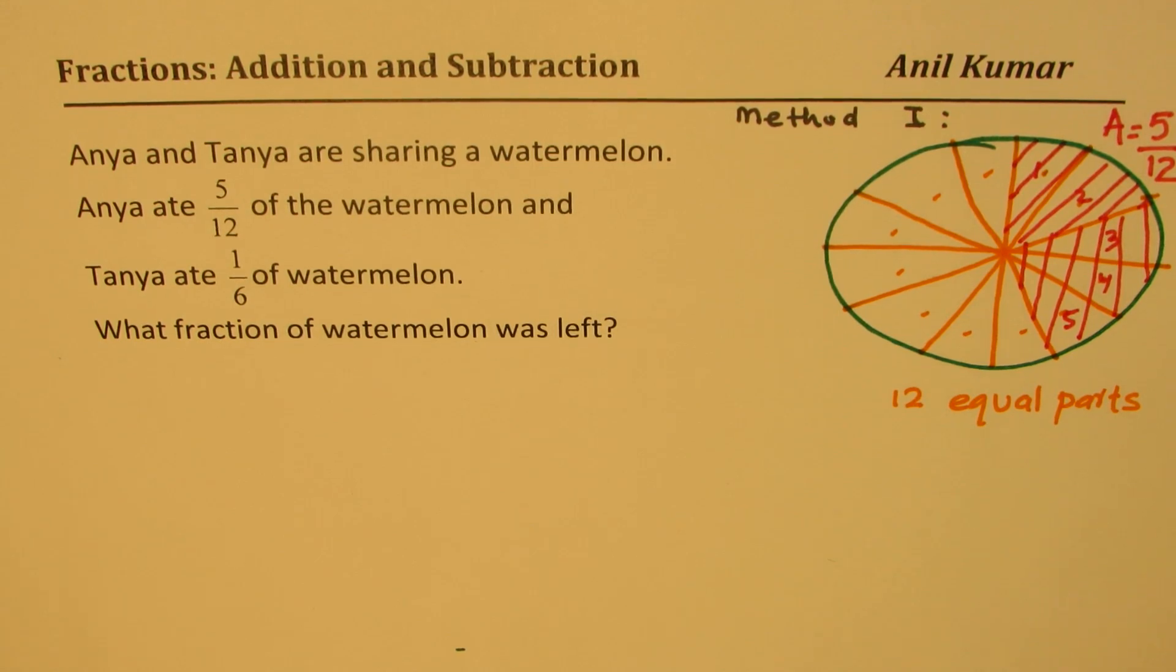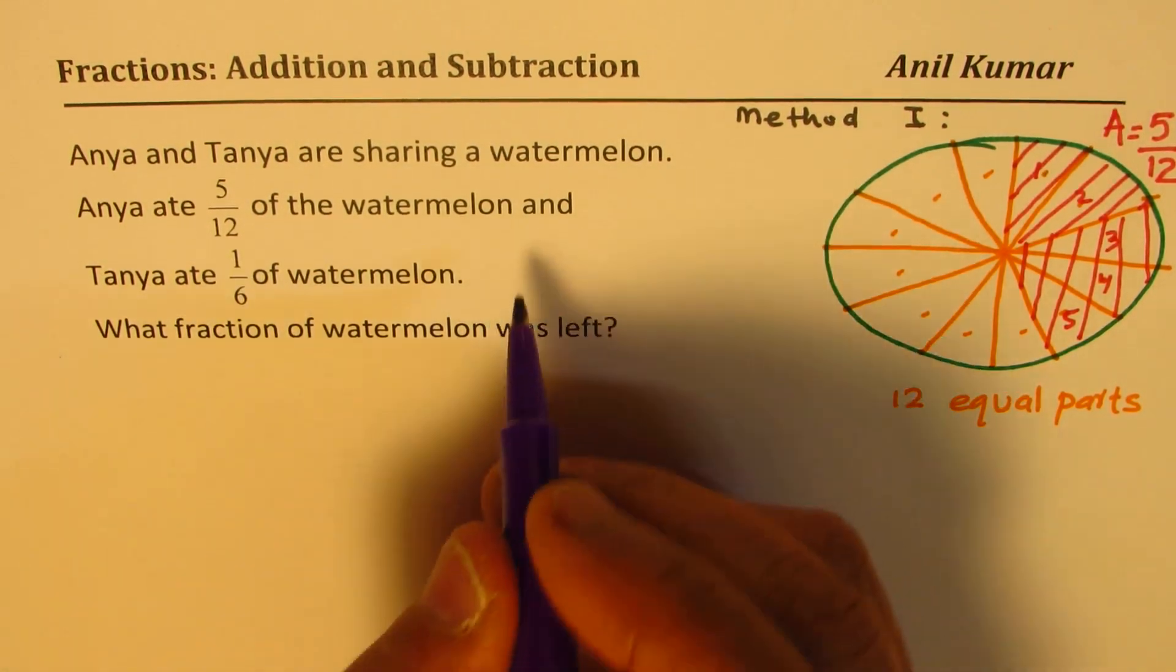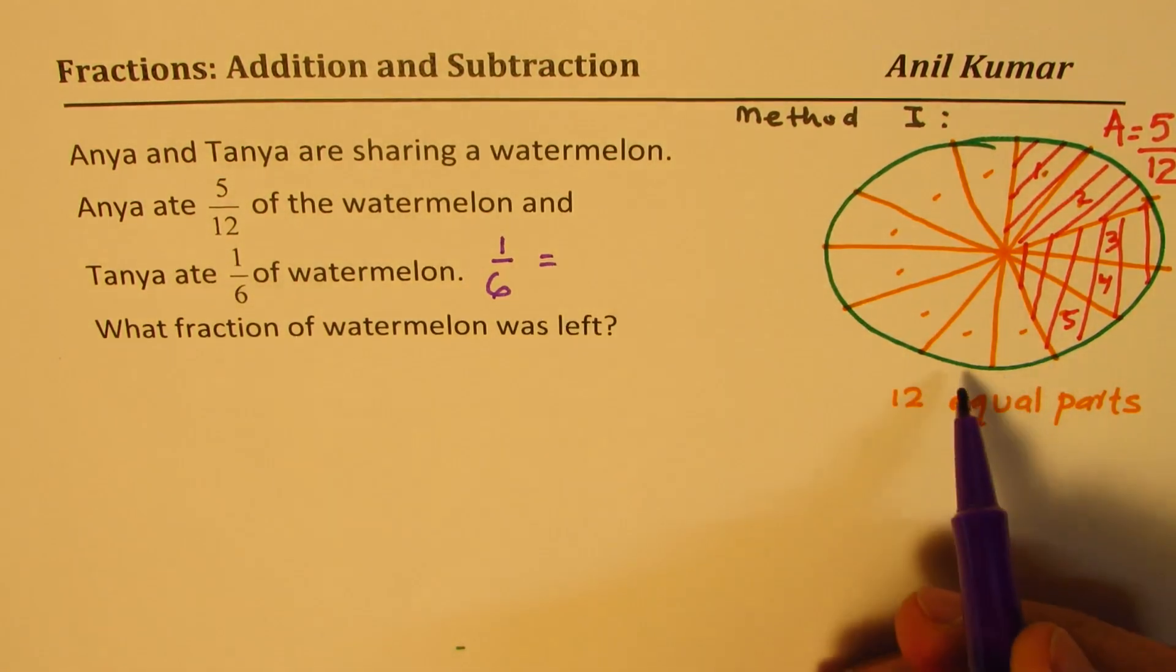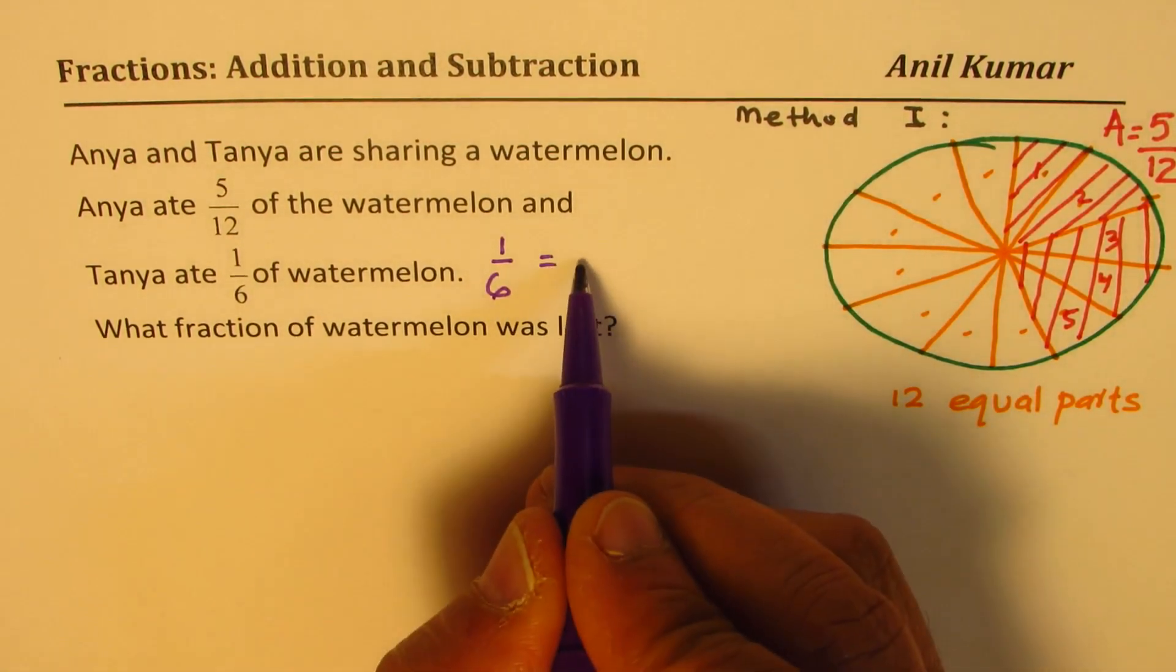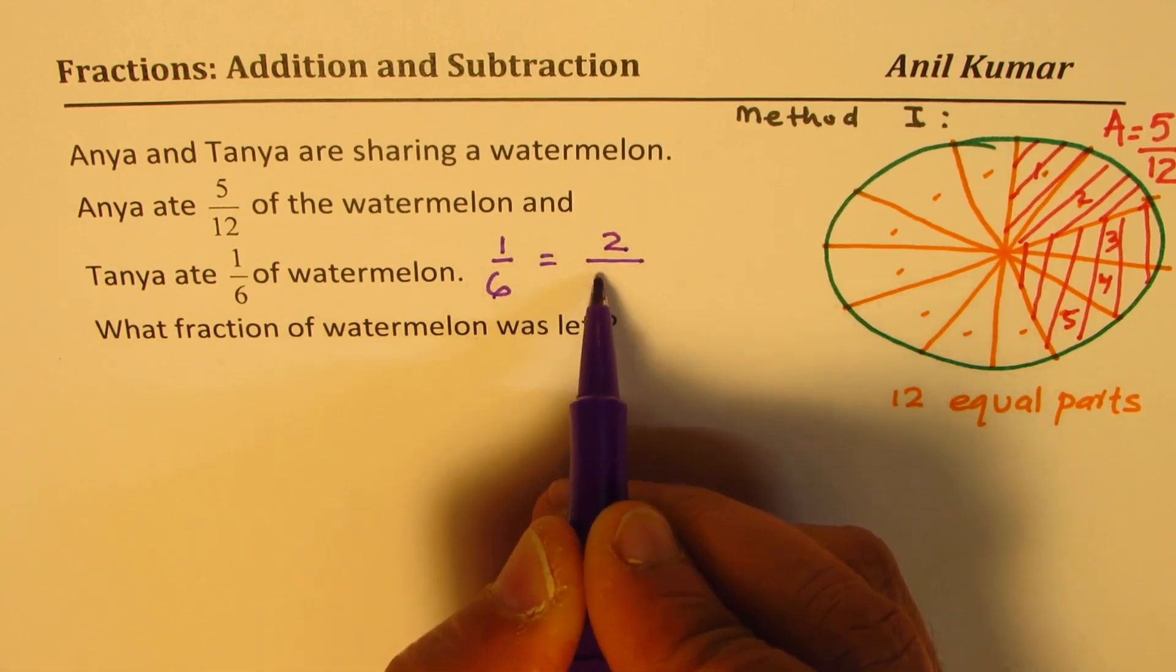Now, let's talk about Tanya. We say Tanya ate 1/6th. Now, what is 1/6th equal to? We have 1/12th. So what we will do here is we'll multiply by 2. So we'll 2 over 12.